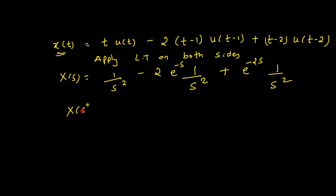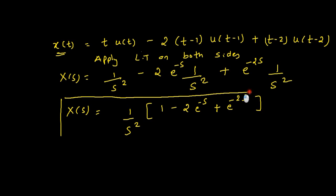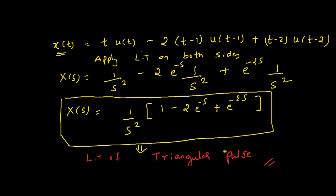So X(s) is equal to (1/s²)·[1 − 2·e^(−s) + e^(−2s)]. That is the Laplace transform of the triangular pulse.